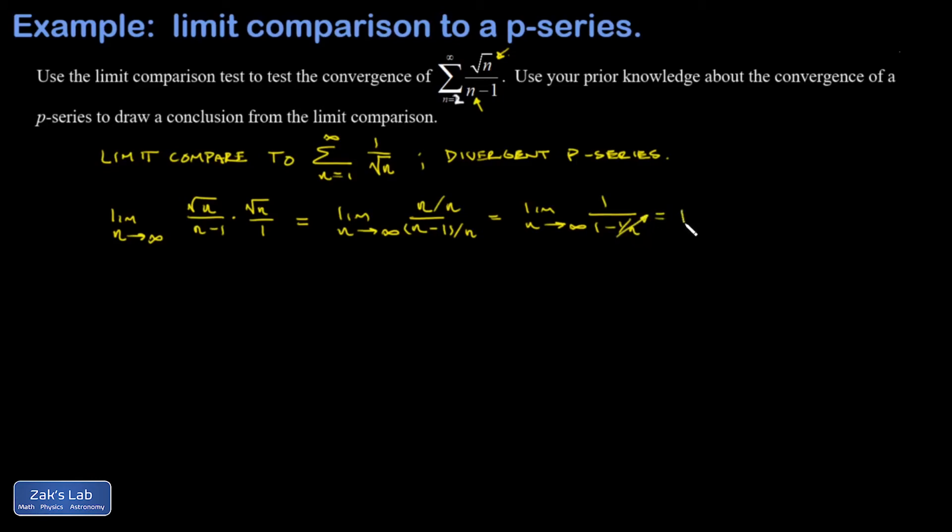The limit of one is just one. Now if this limit goes to a finite number, then the two series that we're comparing are guaranteed to have the same convergence behavior. That means the series that we started with diverges, so our series diverges just like the divergent p-series we compared to.